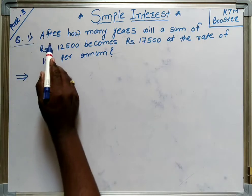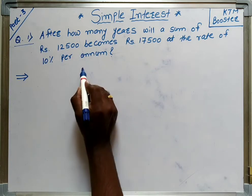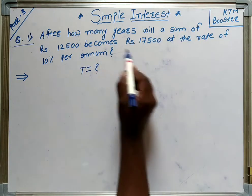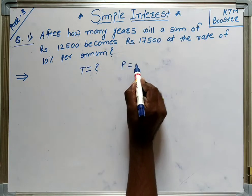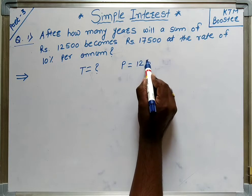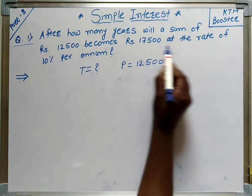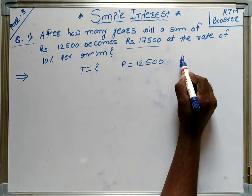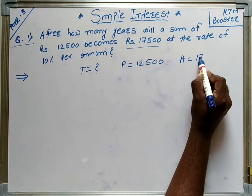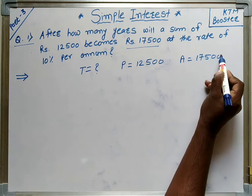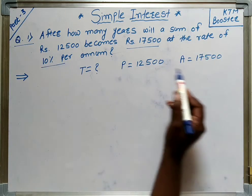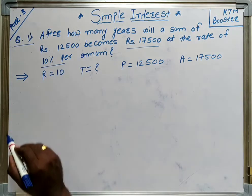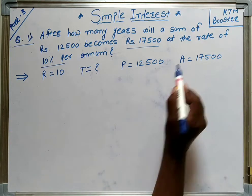Starting with the first question: after how many years — we have to calculate T — will a sum of rupees 12,500 become 17,500? So 12,500 is the principal and 17,500 is the amount. At the rate of 10% per annum, R is given as 10. So P is given, A is given.